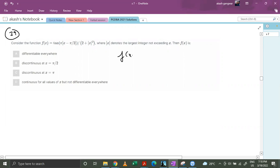Let's try to write it out. f(x) equals to tan of pi times [x minus pi by 2] divided by 2 plus [x] square. This is GIF function. This is also a GIF function.